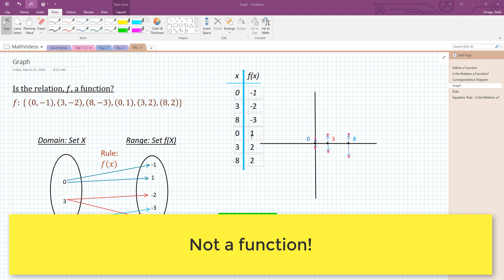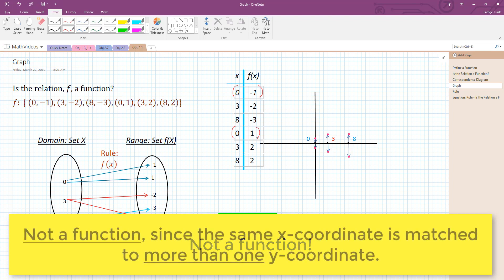it's being sent to two places. It's being sent to negative 1 and 1. In other words, there's two ordered pairs with the same x-coordinate. So that's how you can tell that your table of values is not a function.